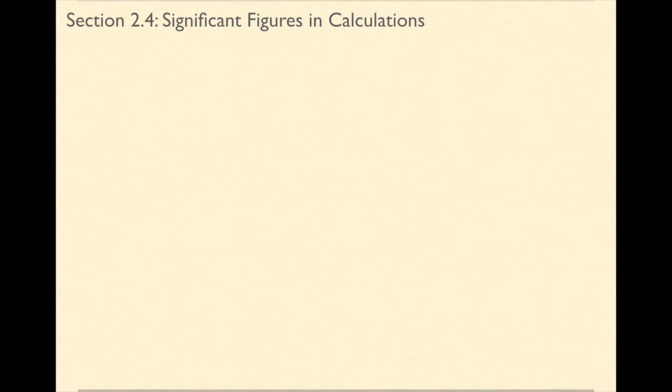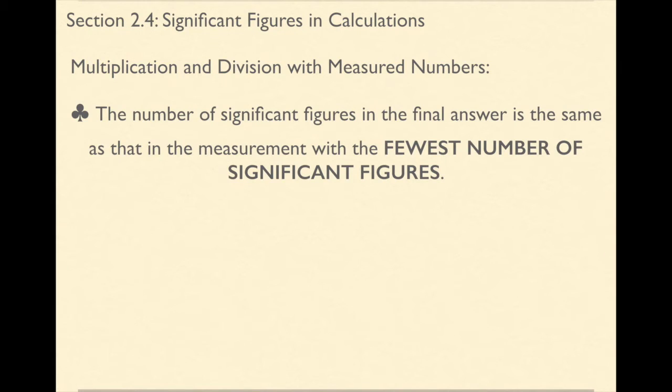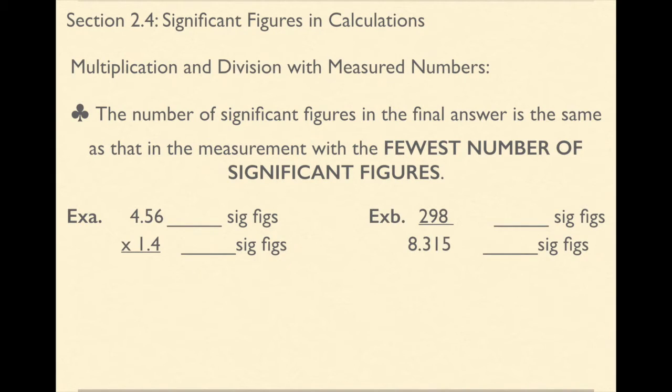The next thing that we're going to be talking about and what we're going to be using throughout this class is significant figures in calculations. So whenever you complete a calculation in this class, your final answer is going to have to be rounded. And the way that you round it is based on either significant figures or decimal places, depending on what you are doing in your final calculation. So if your final calculation is multiplying or dividing, the number of significant figures is going to be the same as the measurement with the fewest number of significant figures. So let me give you an example.